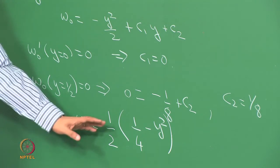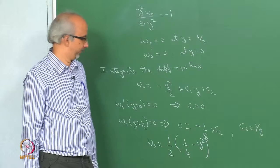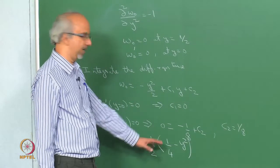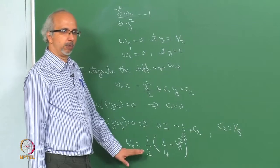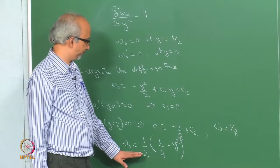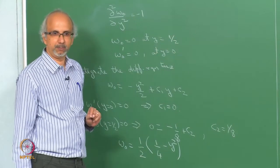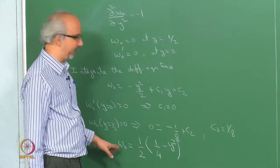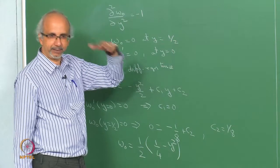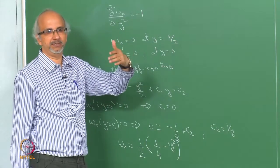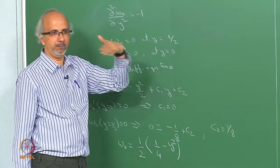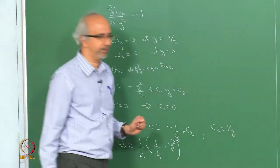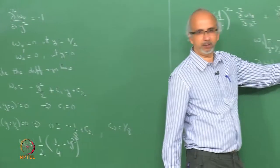So w0 equals half of (1/4 minus y-squared) — that is my parabolic profile, the Bayes solution. Now what we want to do is construct the solution for w1. I need this information to find w1. Whenever you are doing a perturbation series, you are converting a problem into a hierarchy of problems; you use this information to construct the next solution.